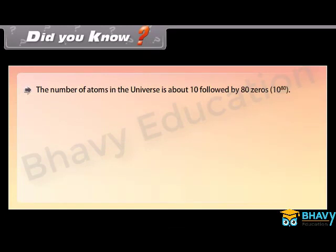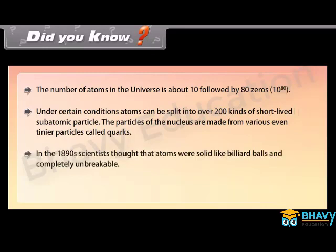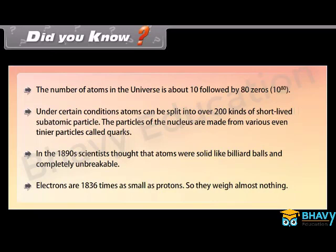Did you know? The number of atoms in the universe is about 10 followed by 80 zeros. Under certain conditions, atoms can be split into over 200 kinds of short-lived subatomic particles. The particles of the nucleus are made from even tinier particles called quarks. In the 1890s, scientists thought atoms were solid like billiard balls and completely unbreakable. Electrons are 1836 times smaller than protons, so they weigh almost nothing.